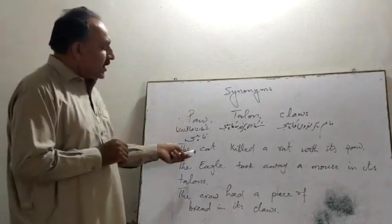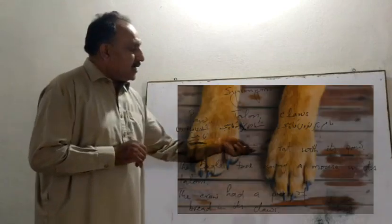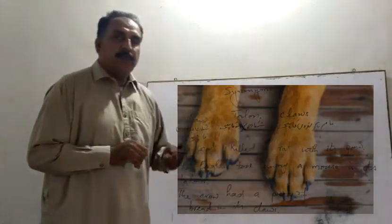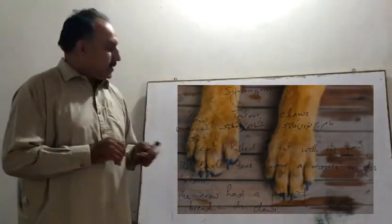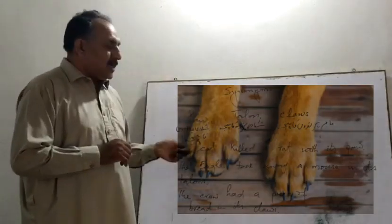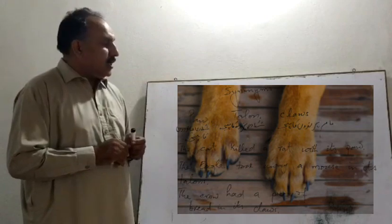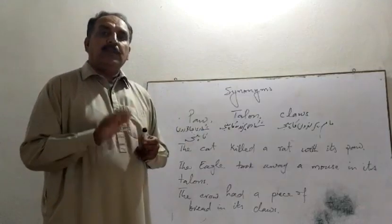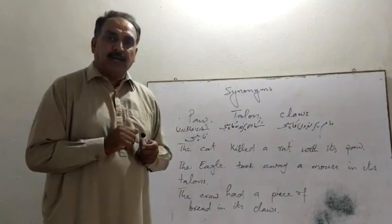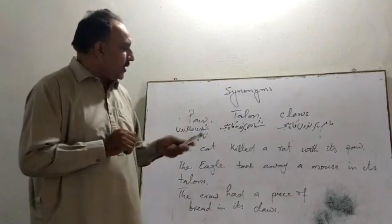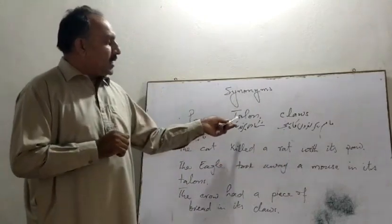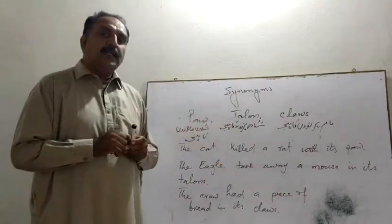The cat killed a rat with its paw. یعنی بلی نے ایک چوہے کو اپنے پنجے سے مارا۔